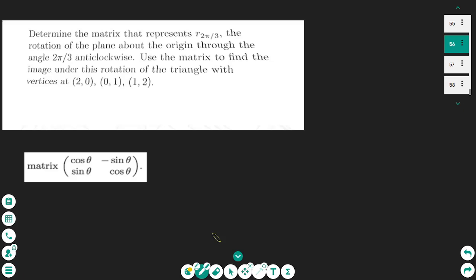Hello everyone, in this lesson we are going to learn how to do a rotation using a matrix anticlockwise. Determine the matrix that represents the rotation of the plane about the origin through the angle 2π/3 anticlockwise, and use the matrix to find the image under this rotation of the triangle with